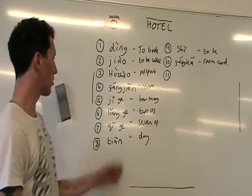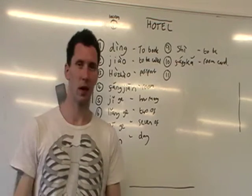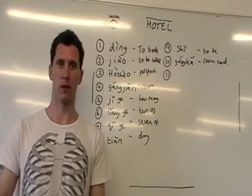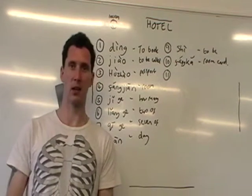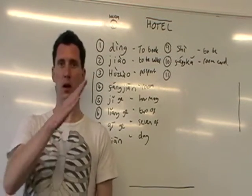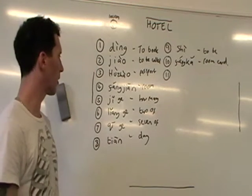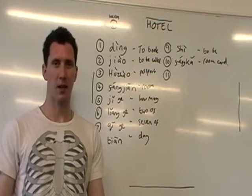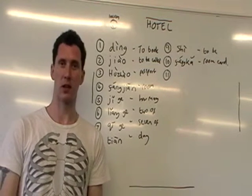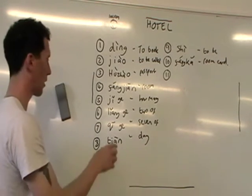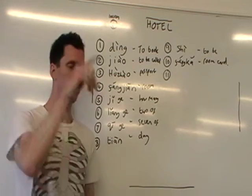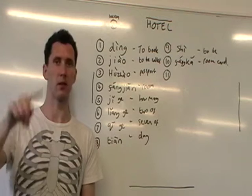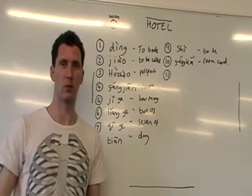Next one: 'two of.' This has gè in it again, but it's saying 'two of.' Now, two in Chinese is èr, but in this case when we say 'two of something,' we say liǎng — like getting, in English, saying 'a couple.' So liǎnggè means 'two of,' like two rooms.